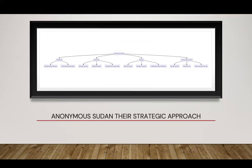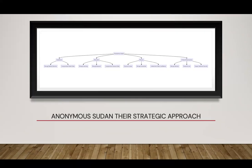The hacker group appears to have developed a strategic approach focusing on key sectors critical to a nation's function and well-being. When Anonymous Sudan or any threat actor attacks a country, they are not attacking randomly — they find and target the nation's critical sectors. Their main targets include healthcare: by attacking hospitals and healthcare providers, they disrupt critical medical services and potentially compromise sensitive patient data.